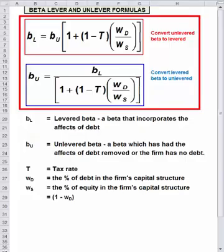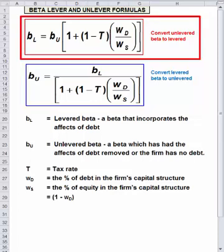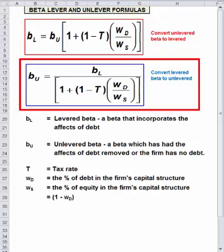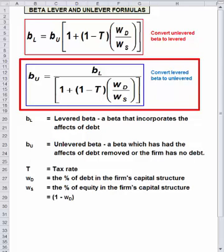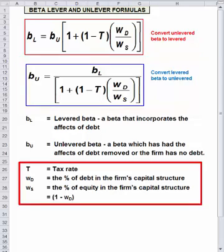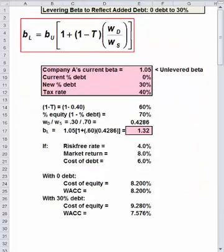These are the two formulas we're going to work with. They are presented in a slightly different form than in most textbooks to highlight when you multiply and when you divide. The equation on top converts an unlevered beta to a levered one - you multiply. The equation below reverses the process, removing the effects of debt from a firm's beta. Both equations require the percentages of debt and equity and the firm's tax rate. Now let's look at the examples.